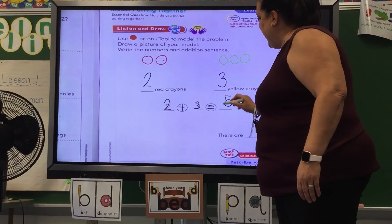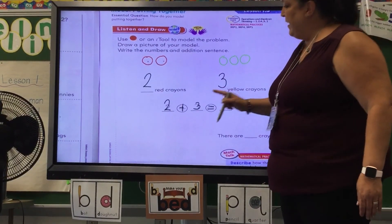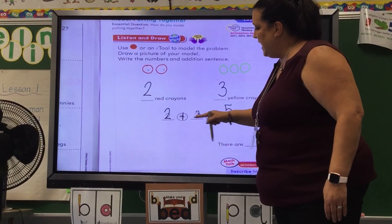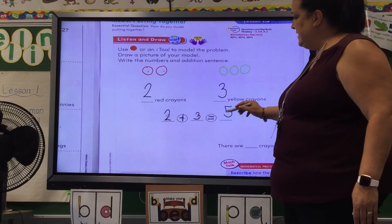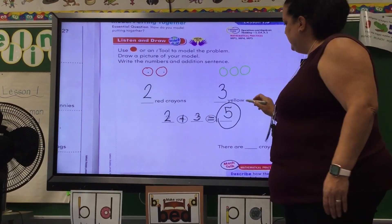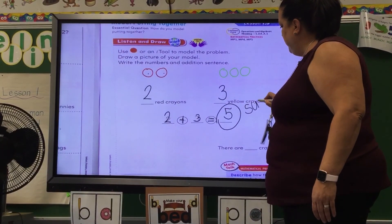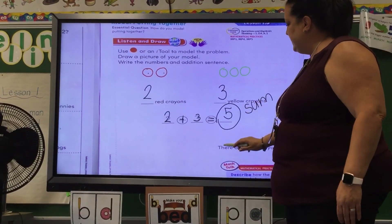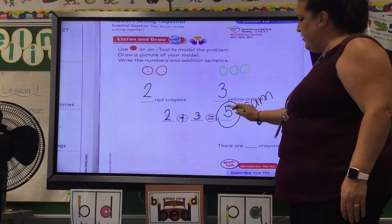Now you remember in the last lessons we talked about how this is a plus sign, this is an equal sign, the whole thing is an addition sentence and what's the answer called? Do you remember what that answer's called? It's called a sum. Sum is the answer. Okay so what is our sum? There are how many crayons all together? Five.